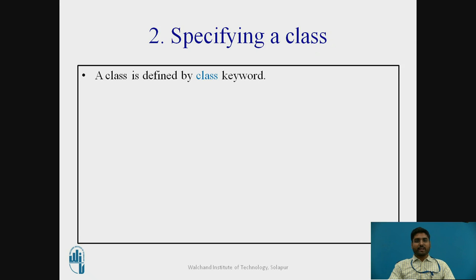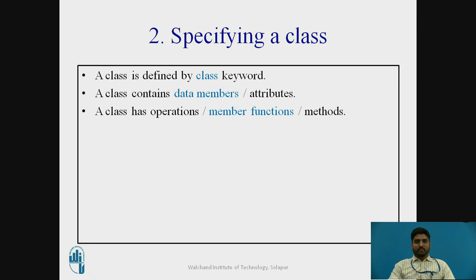The class is defined by the class keyword and contains data members, which are also called attributes. The class also has operations, or member functions, or methods.